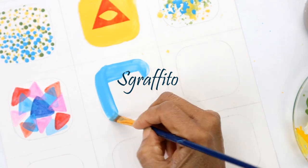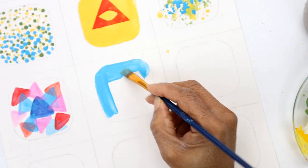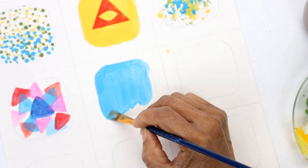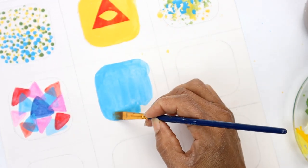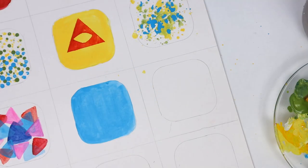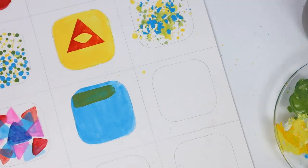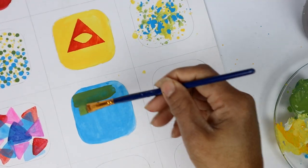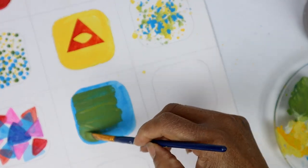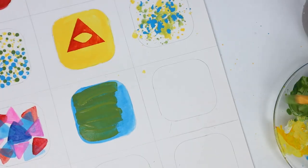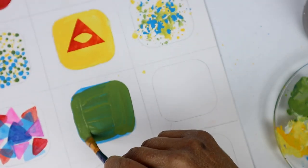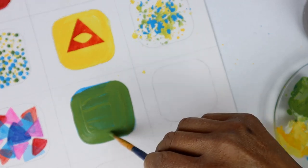Up next, we'll be scraping off some paint using this graffito technique. I'm going to try laying down one color and then placing another color on top before I start scraping. Now that the first layer is dry, I'm going to add my second layer. And this layer needs to be really wet in order to achieve this graffito effect. We have to move fast because we don't want the paint to dry before we start scraping.